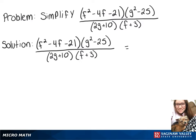we have that quadratic expression that we can factor, and that will turn into f minus 7 times f plus 3. And then next to that, we have a difference of squares, which we can write as g plus 5 times g minus 5.